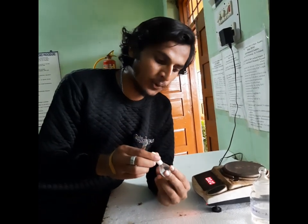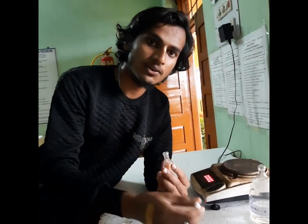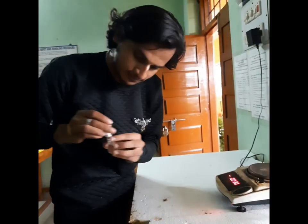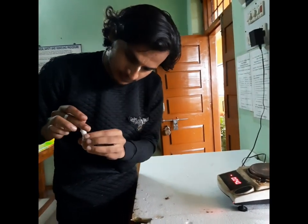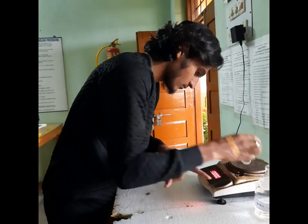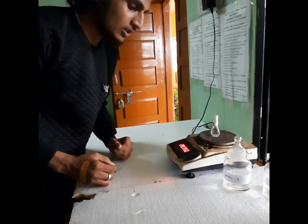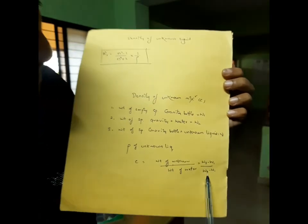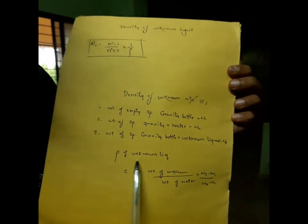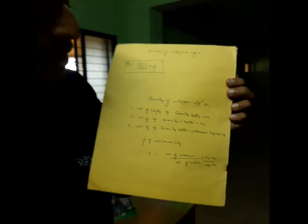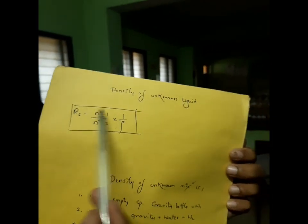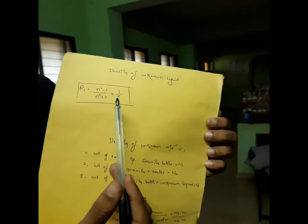We need to weigh for the unknown mixture — 28.35. Using this formula, we can calculate the density of the unknown liquid. After that, we should apply the specific refractive index formula for each liquid.